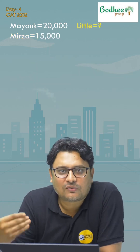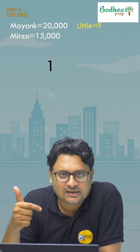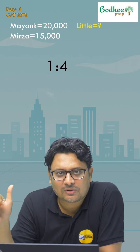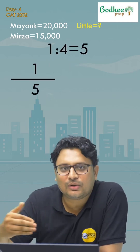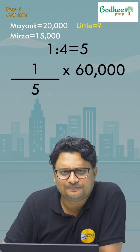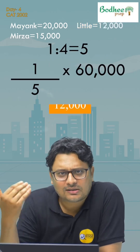Similarly for Little: one fourth means 1 for Little and 4 for the others. So this will be 1 out of 5 into 60,000, which is 12,000.